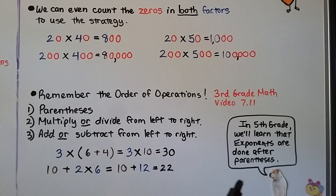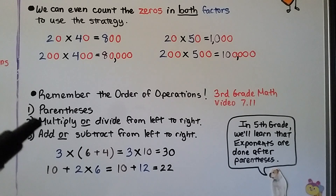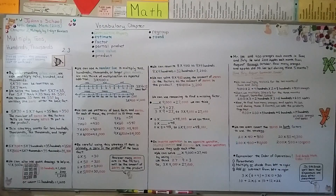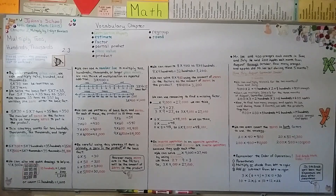In fifth grade math, we'll learn that exponents come after parentheses, then multiply or divide, then add or subtract. Remember, when multiplying tens, hundreds, and thousands, however many zeros are in the factors will be the number of zeros in the product. In our next lesson, 2.4, we are going to estimate and do rounding for multiplication.